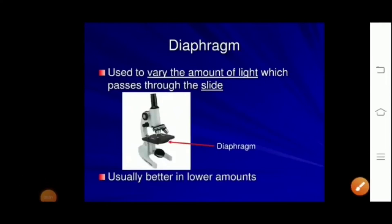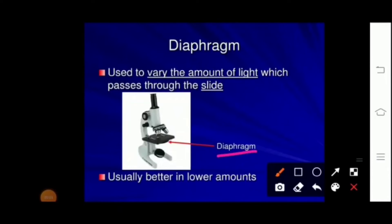The next part is the diaphragm and condenser — two knobs below the stage. They adjust the amount of light entering through the stage, which comes from the mirror, so that we can see the object clearly.